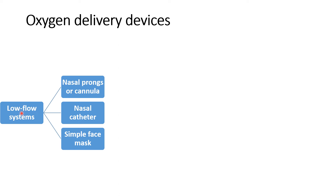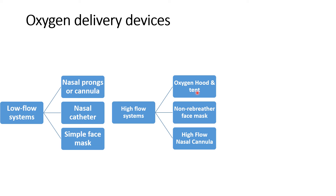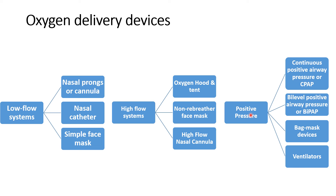Various oxygen delivery devices are categorized into three types: low flow delivery devices, including nasal prong cannula, nasal catheters, and simple face mask; high flow oxygen delivery devices, including oxygen hood, non-rebreathing face mask, and high flow nasal cannula; and positive pressure oxygen delivery devices, including CPAP, BiPAP, bag-and-mask ventilation, and mechanical ventilators, in which we can set all pressures.